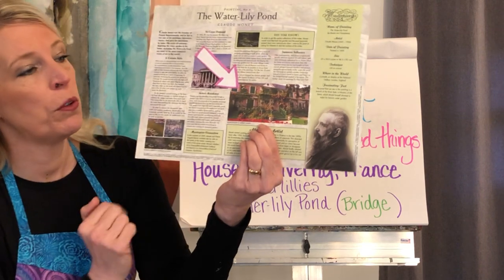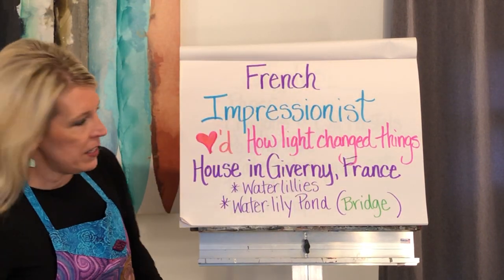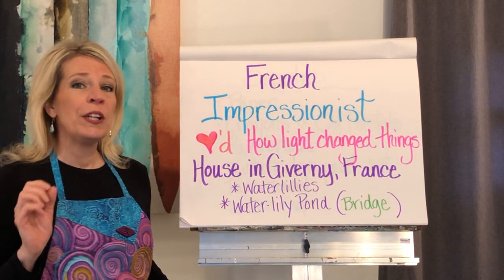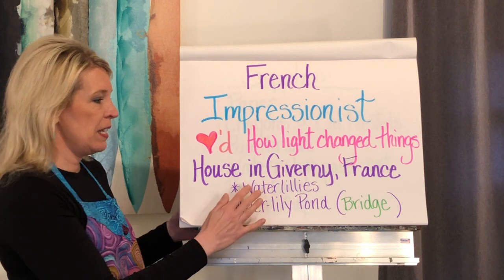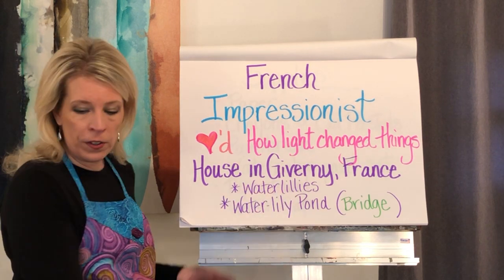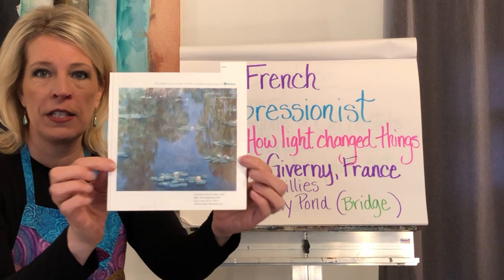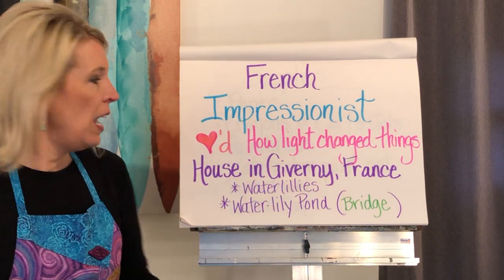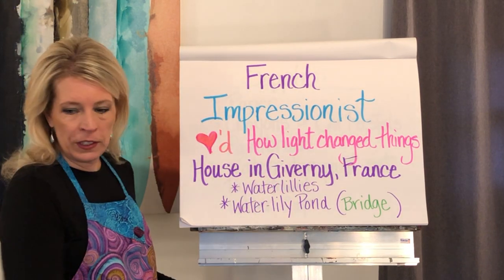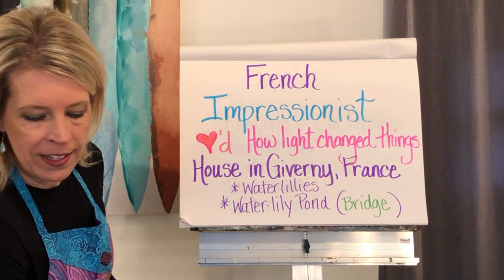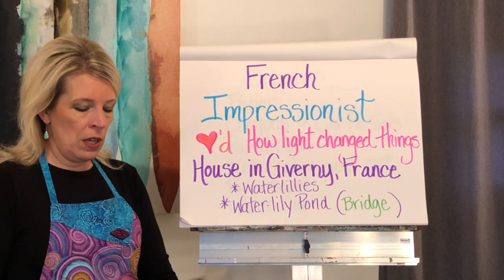It was a pink house with green trim, and this house was where he did some of his most famous paintings — his water lilies, and the water lily pond which was the bridge in the back of his house.